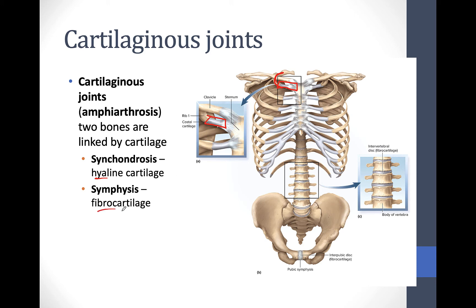A symphysis is made up of fibrocartilage, and we have two good examples. The pubic symphysis is where the two hip bones come together in the front. This joint actually gets a little loosened in women who are going to have a baby, to allow the birth canal to expand. You also have fibrocartilage in your intervertebral discs between all your vertebrae, which collectively give you flexibility. Each individual joint doesn't move a lot, but because you have so many joints along the vertebral column, you're able to achieve a large range of motion.